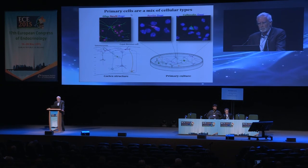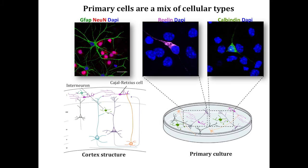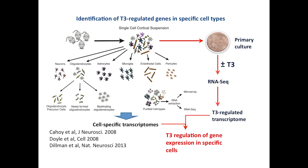Another advantage of the primary cells is that they are a mix of cell types. The cells have been stained for astrocytes with GFAP, for neurons with NeuN, and for nuclei. The same culture is stained for the protein reelin, which only stains a very small number of cells — the Cajal-Retzius cells in layer 1 — or calbindin, with very few cells staining. This means that the culture represents a mix of primary cell types, and we have exploited this property to identify T3-regulated genes in very specific cell types.